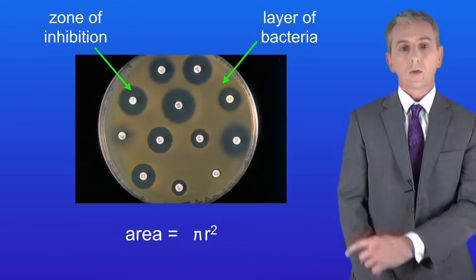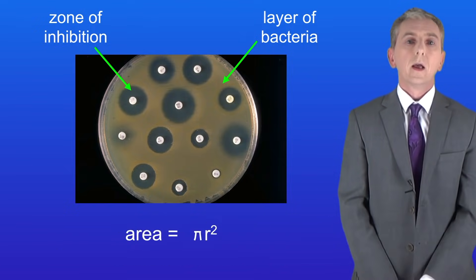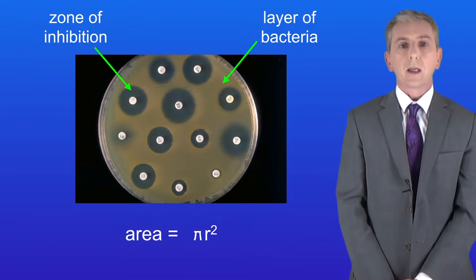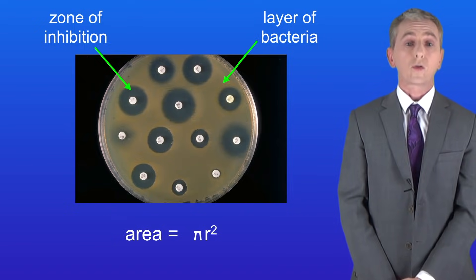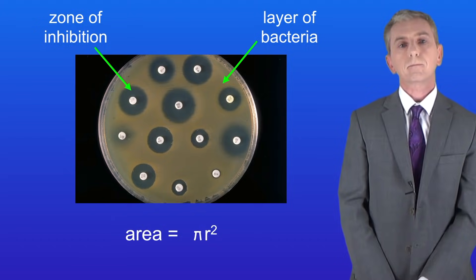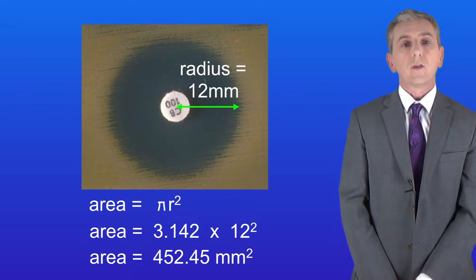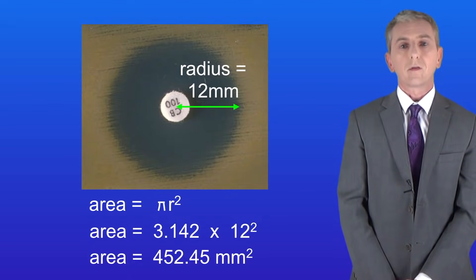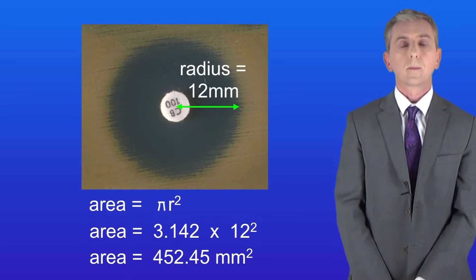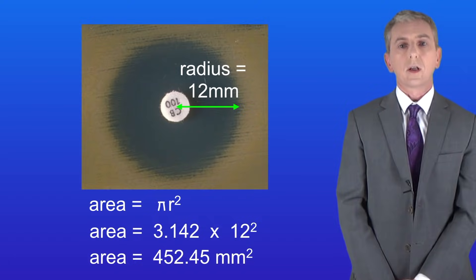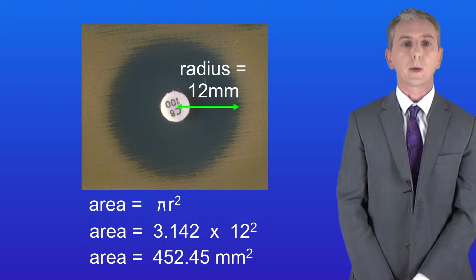To do that we use this equation: the area equals pi multiplied by r squared, where r is the radius of the zone of inhibition. Looking at this example, the radius is 12 millimetres and the value of pi is 3.142. Putting these numbers into the equation gives us an area of 452.45 square millimetres, to two decimal places.